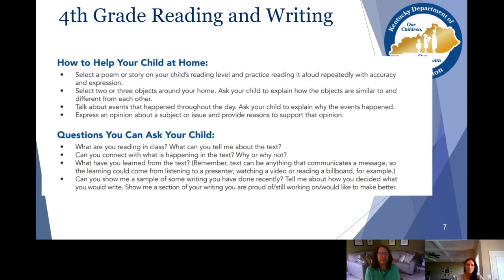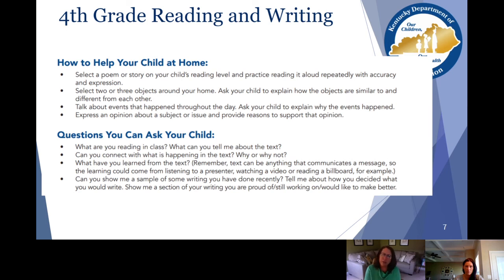Now let's take a look at reading and writing. Ways you may help your child: some of it's about reading, like selecting a poem you can read repeatedly for accuracy and expression, but it also could be more about writing — things you could talk out loud or put on paper. There are also questions you could ask your child. One highlight is expressing an opinion about a subject or issue and then helping them provide reasons to support that opinion, looking at reliable sources and beginning to discern what is reliable versus fake news. This would be a great time to work on internet safety and practice those things together.